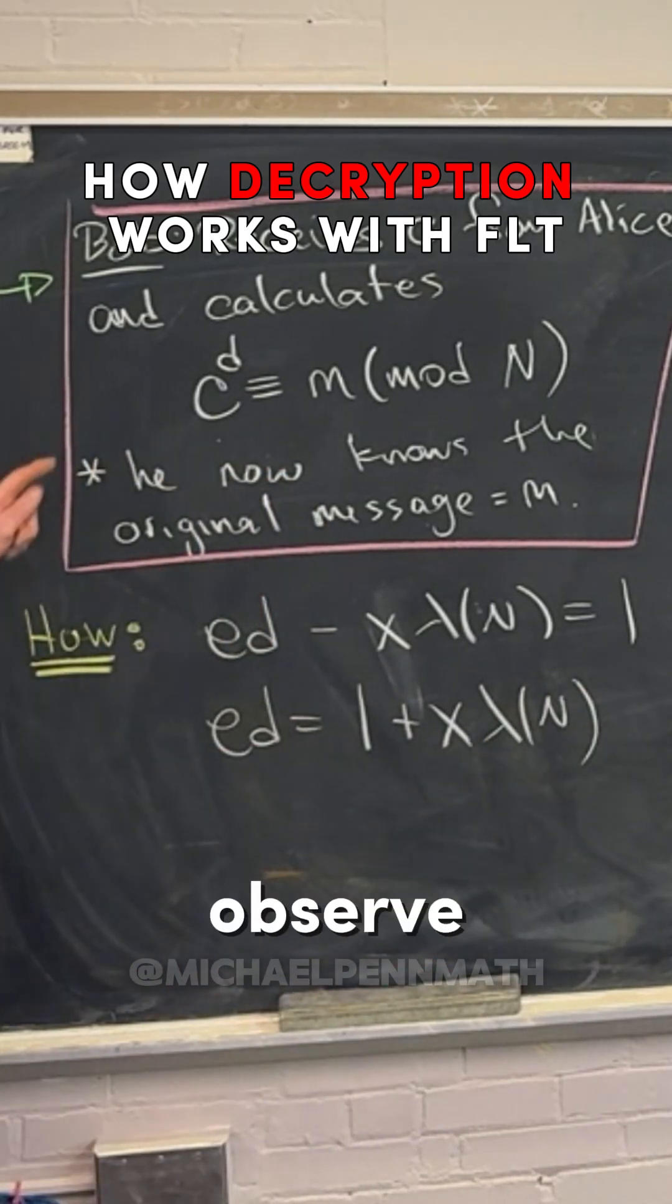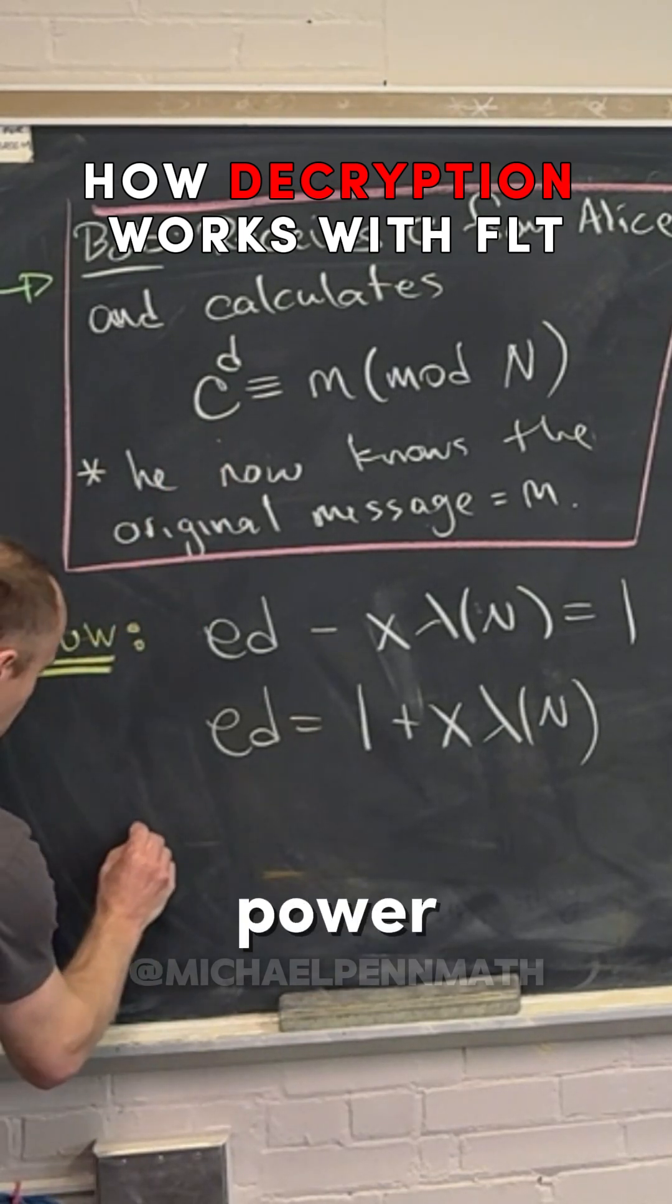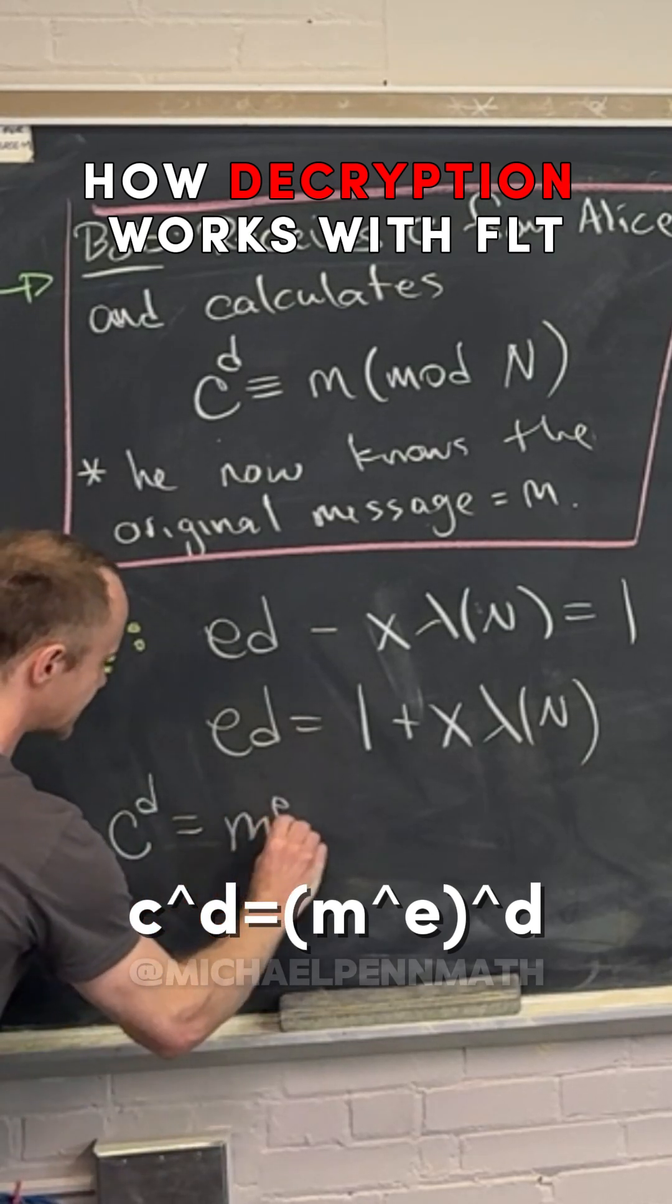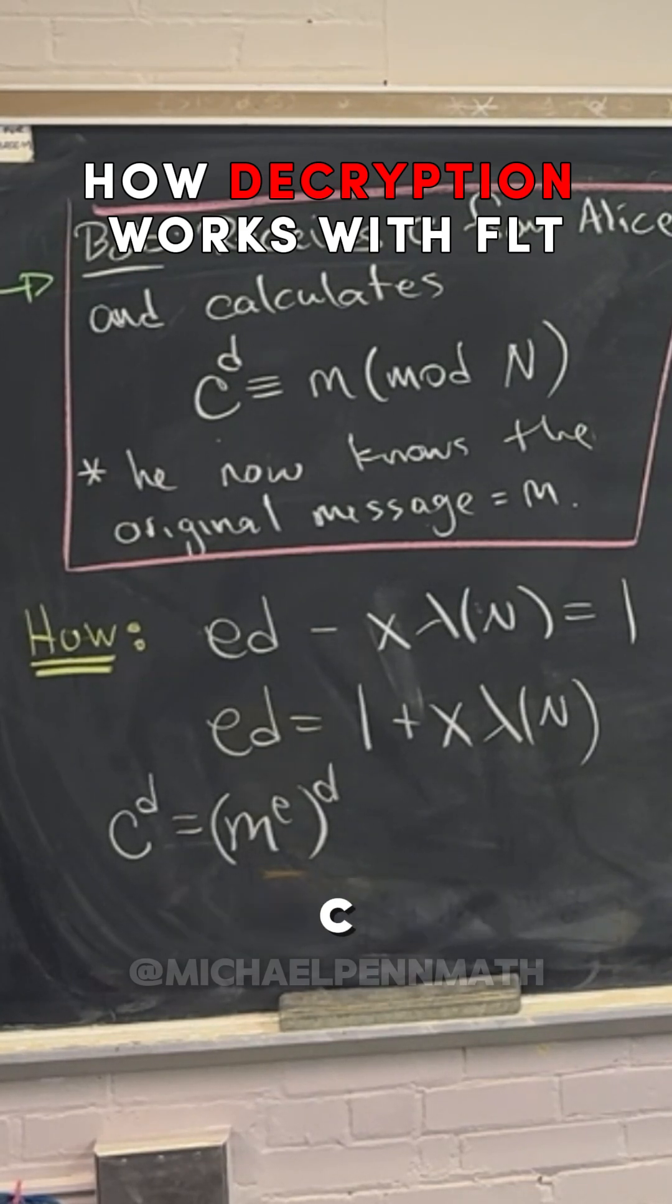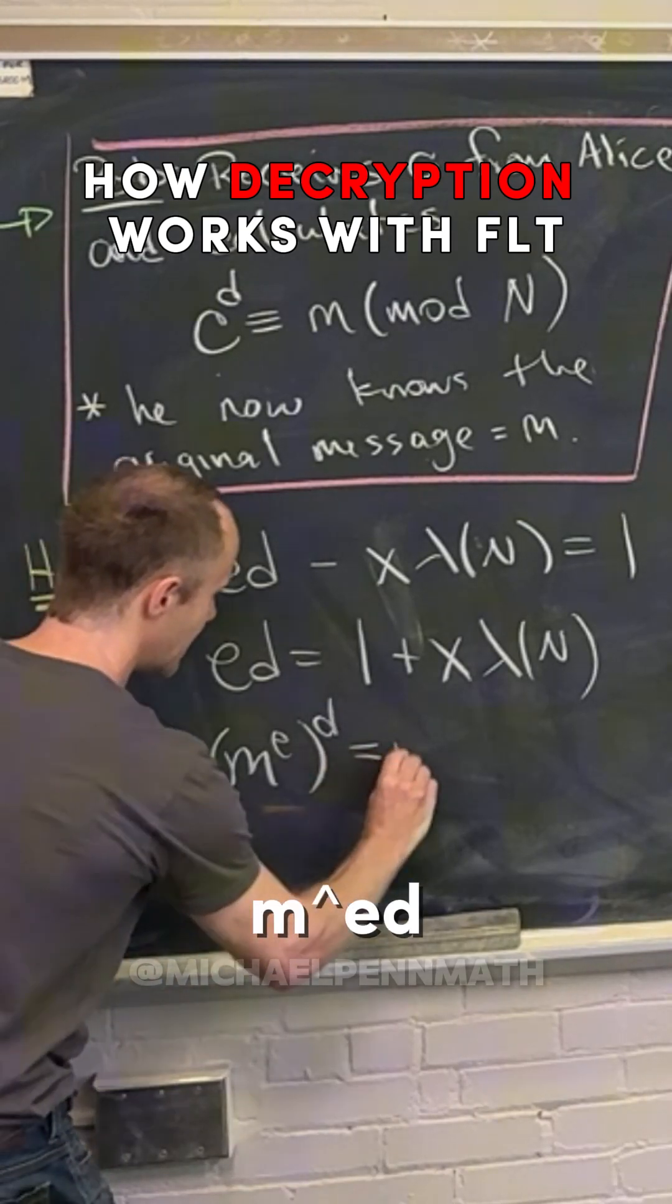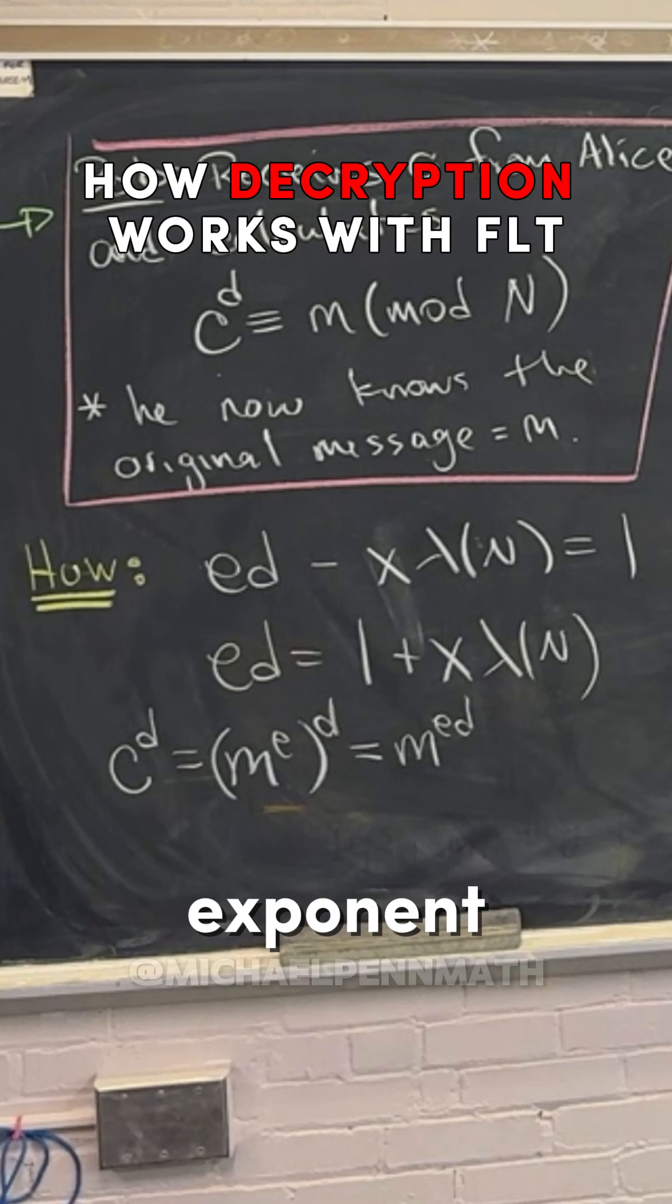And now let's observe what's happening with this c to the d power. So if we look at c to the d power, notice that c was the same thing as m to the e power, right? That's how Alice calculated c, it was m to the e power.